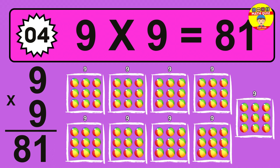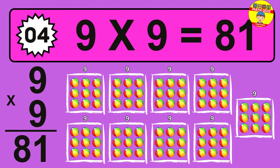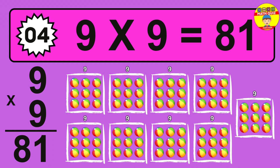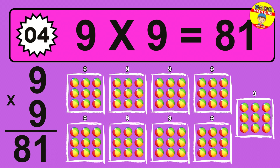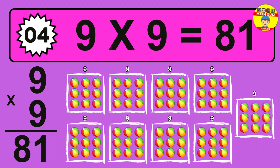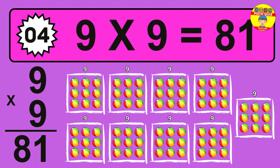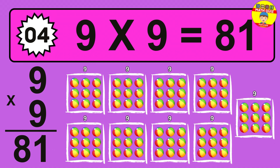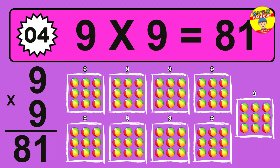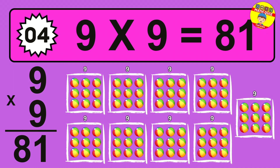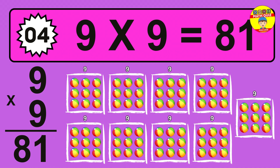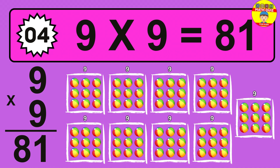The answer is 9 times 9 is 81. To calculate, we have 9 groups with 9 balls each one. So, how many balls do we have? 81 balls.